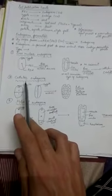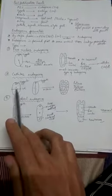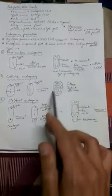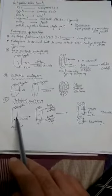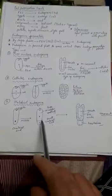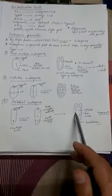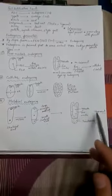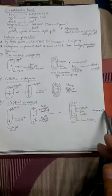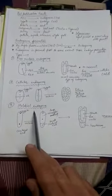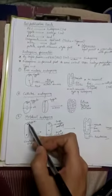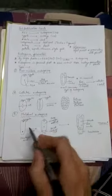In helobial endosperm, you find a large number of free nuclei. Coconut is an exception where free nuclei are followed by cellular endosperm. In the second method — cellular endosperm — from the beginning every nuclear division is followed by cell wall formation. In helobial type, only the first division is cellular; the rest are free nuclear. The majority of monocots have helobial type of endosperm.